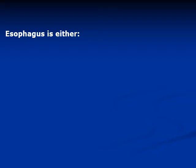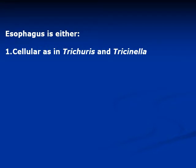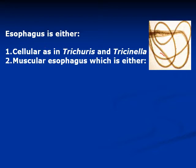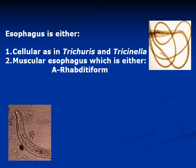The oesophagus is also used for differentiation of types of nematodes. It is either a stichocyte (cellular) oesophagus, as in the case of Trichuris and Trichinella — the long thin part formed by one row of cells — or a muscular oesophagus where the oesophageal glands are surrounded by muscles. This muscular type includes the rhabditiform oesophagus, which has a little constriction behind the middle.